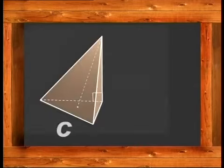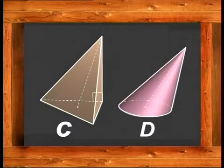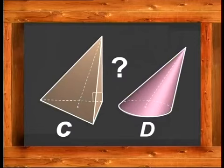Is C a right pyramid and D a right circular cone? Discuss it with your friends and explain your answer.